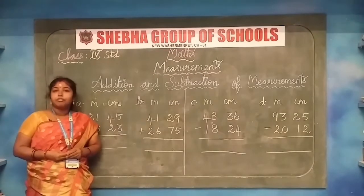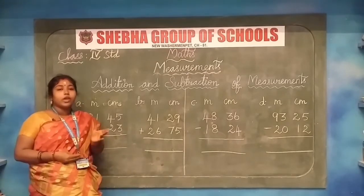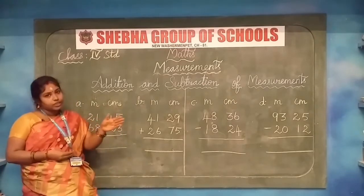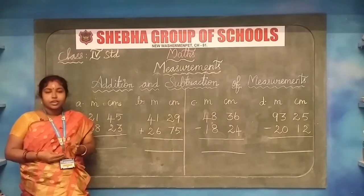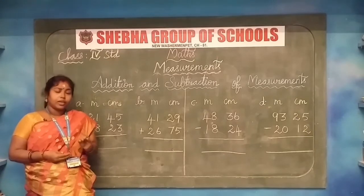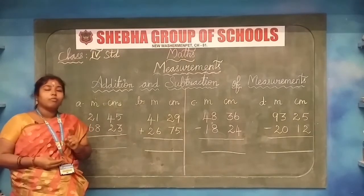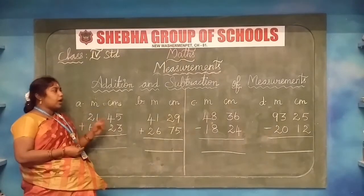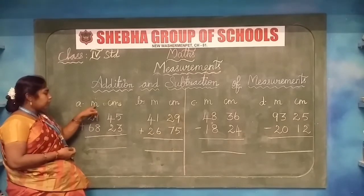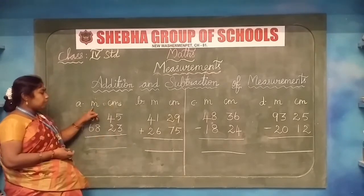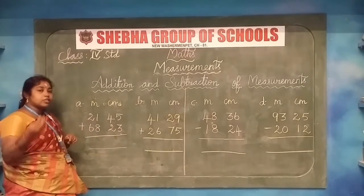I trust everyone understands how to convert meter into centimeter and centimeter into meter. Now we are going to see the addition and subtraction of measurements. In our previous class I taught you how to do addition with and without regrouping, and subtraction with and without regrouping. Now we are going to apply those to measurement. The first sum is 21 meter 45 centimeter plus 68 meter 23 centimeter.